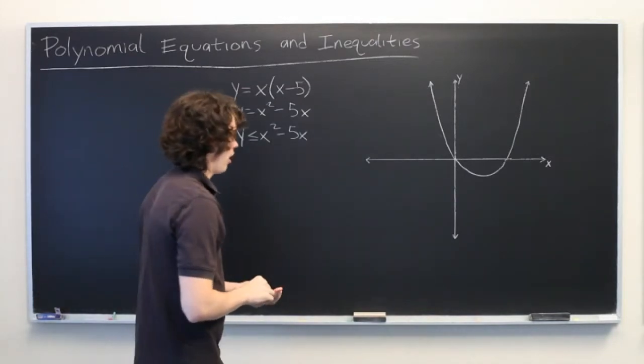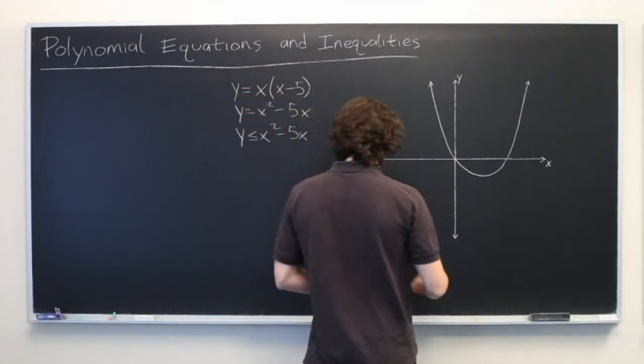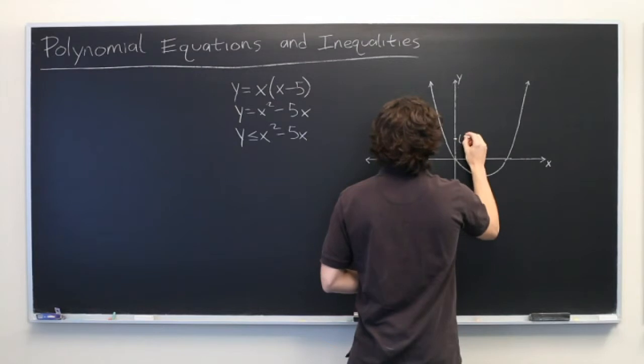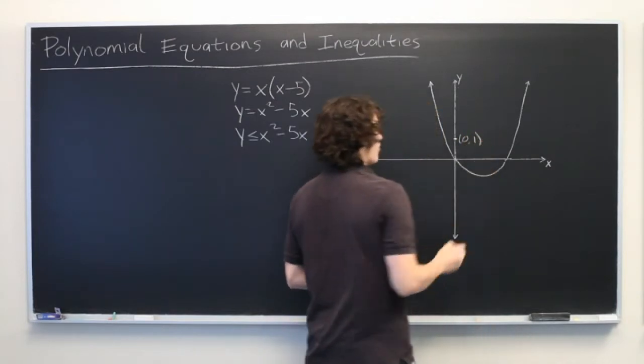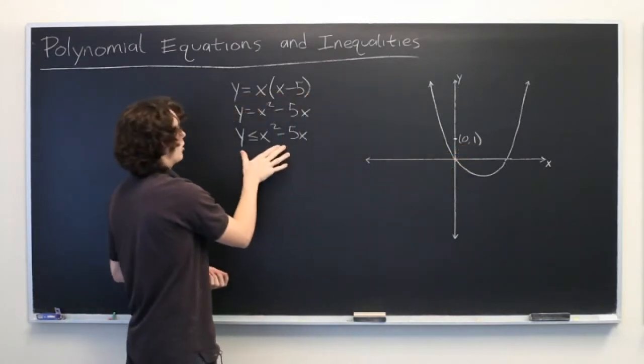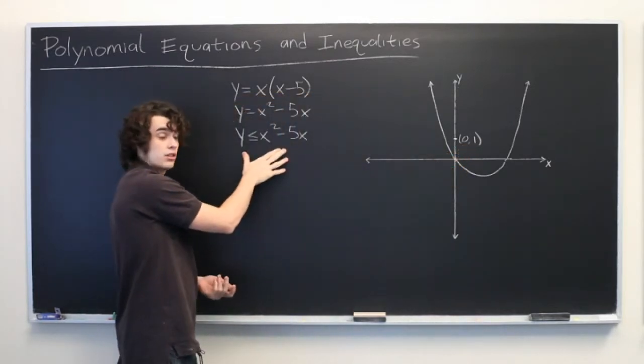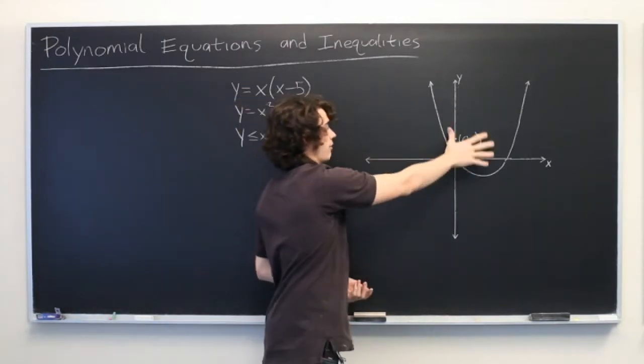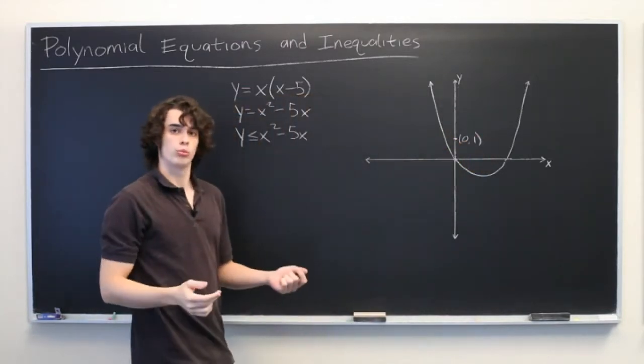Let's pick a point on the graph. How about the point 0, 1? Should be fairly easy to test. So we're going to take those two values and plug them into our inequality and see if it is still true. If it is true, we'll shade in that side of the graph. If it's not true, we'll shade in the other.